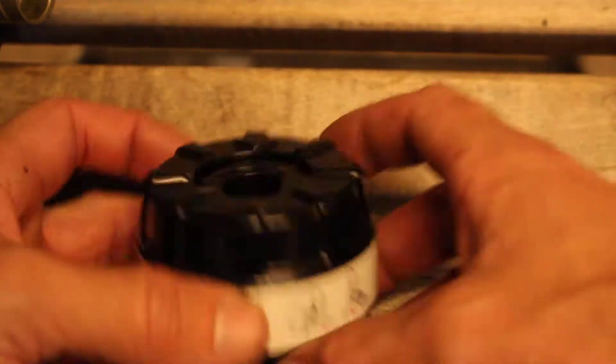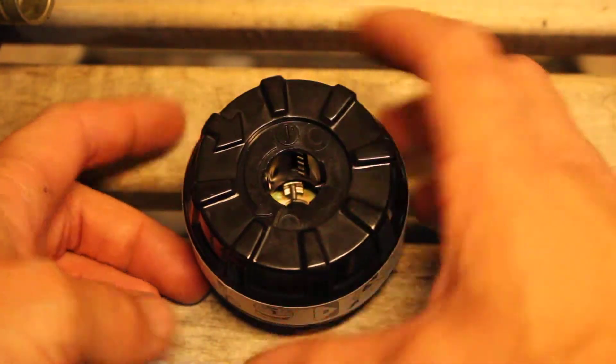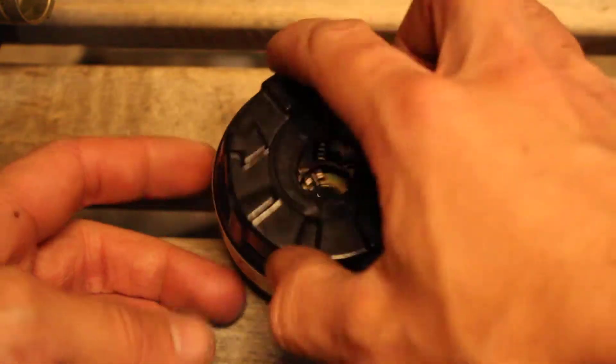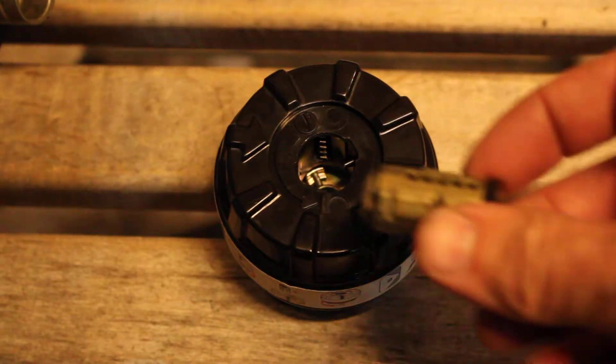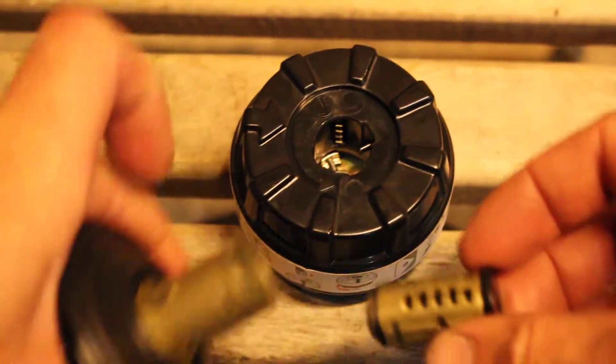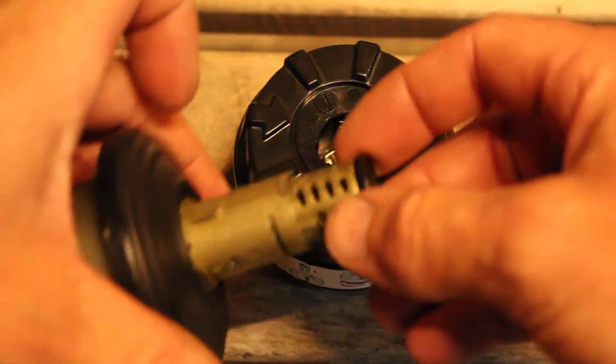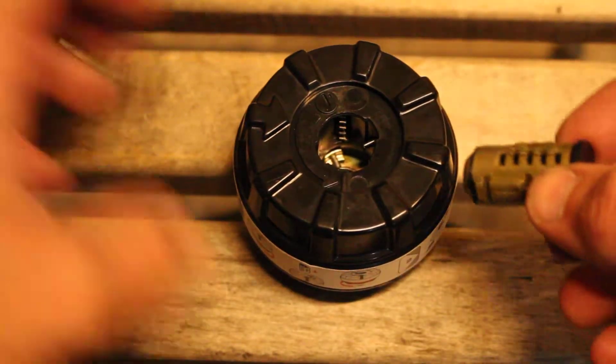In this video I'm going to show you how to use this Wiser smart key rekeying cylinder tool. I have the cylinder out of my lock over here. There's instructions on how to take that out. I might make a video later on how to do that.